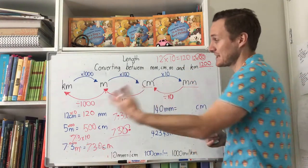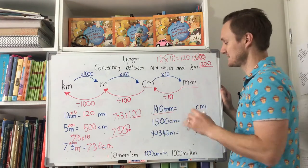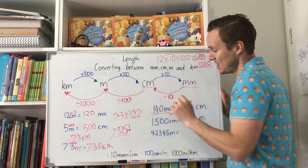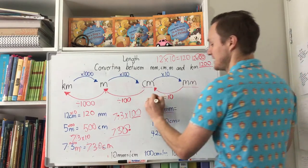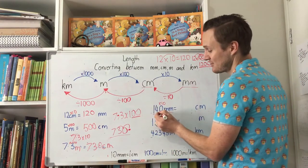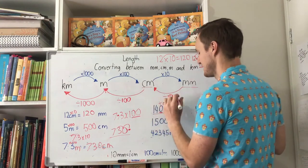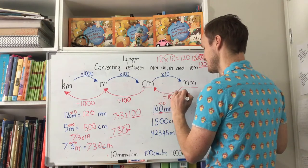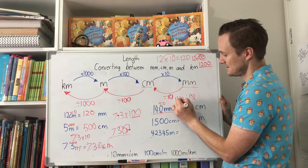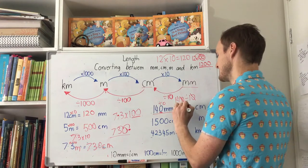Now we're going to go the other way — making the number smaller. 140 millimetres into centimetres: millimetres to centimetres means we divide by 10. With dividing by 10, if there's a zero at the end, you can just cross out both zeros — 140 divided by 10 — and it becomes 14 divided by 1, which gives us the answer 14 centimetres.